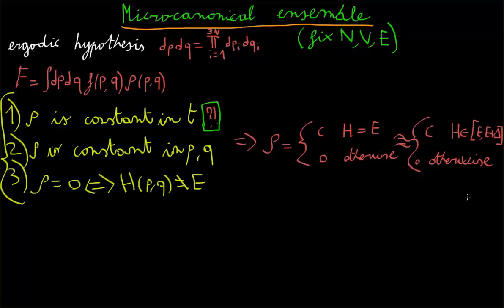Well, that's pretty much it. The only thing which is left now is to figure out what actually this constant is. We can easily understand that by remembering that rho is a probability density function, which means that it has to be normalized. By saying that the integral in dp dq of rho is equal to 1.